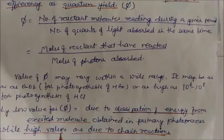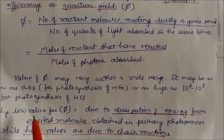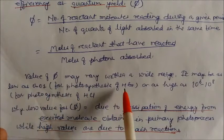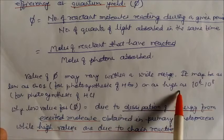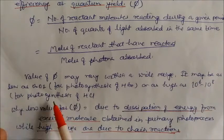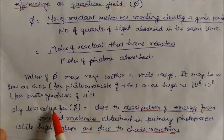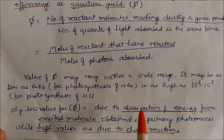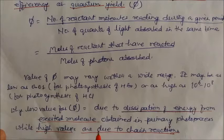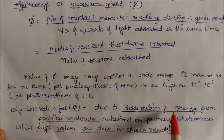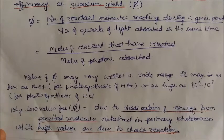The value of quantum yield may vary over a wide range. It may be as low as 0.01 for the photosynthesis of HBr, or as high as 10^6 to 10^8 for the photosynthesis of HCl. The low value is due to dissipation of energy from the excited molecule in the primary photo process. The high value is due to chain reactions.